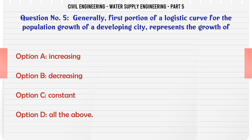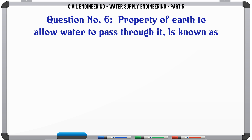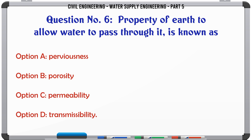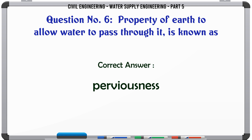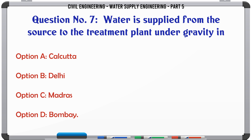Generally, the first portion of a logistic curve for the population growth of a developing city represents growth that is: A. Increasing, B. Decreasing, C. Constant, D. All the above. The correct answer is Increasing.